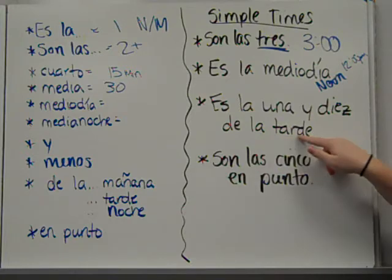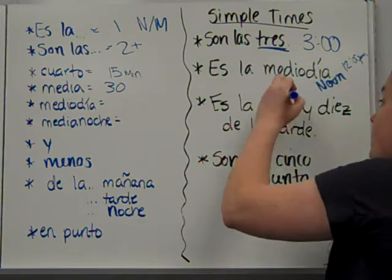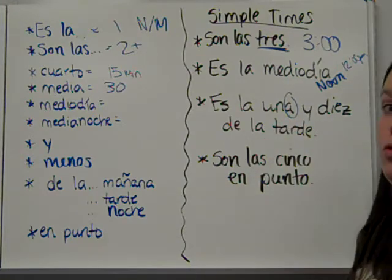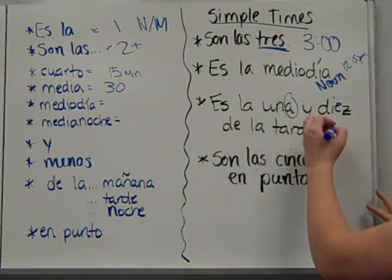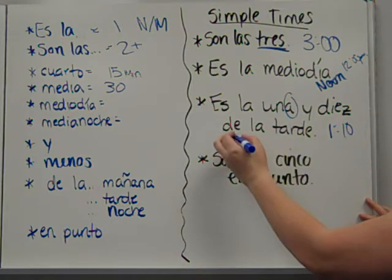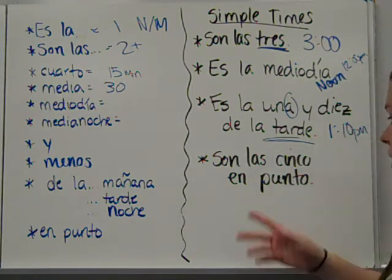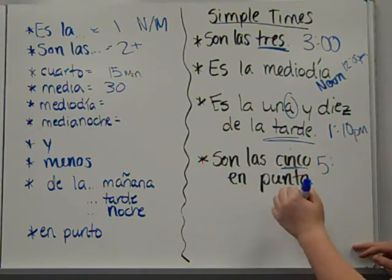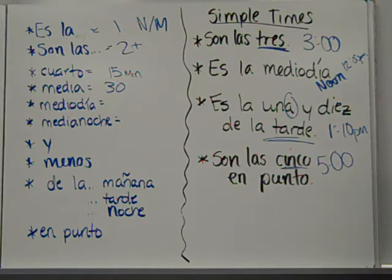Es la una y diez de la tarde. So right now with es la una. See, something to note. It's not es uno. La hora is feminine. So uno changes to una. This is the only number that changes its spelling, by the way, in this case. Es la una. So one. Y and diez. Ten. One and ten. So one ten. De la tarde. That means it's in the afternoon. Last one. Son las cinco en punto. So it is five. And then en punto. On point. On the dot. Again, I haven't given you a.m. or p.m. And so that's fine if you just write five.